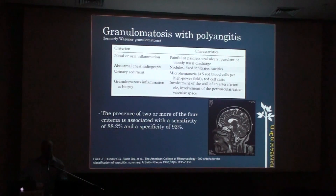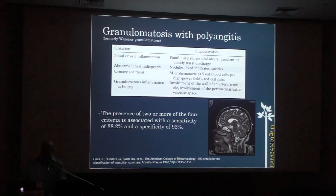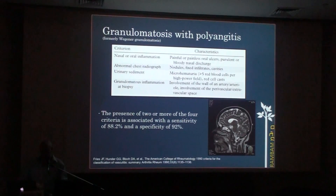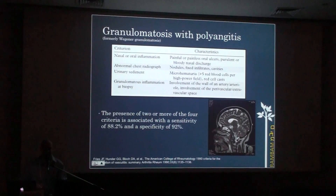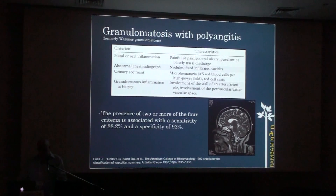In terms of the ACR rheumatology criteria, she met all the criteria needed to be diagnosed with GPA, including an MRI done during her hospitalization which showed nasal mucosal thickening and sinusitis with involvement of the nasal cavity.